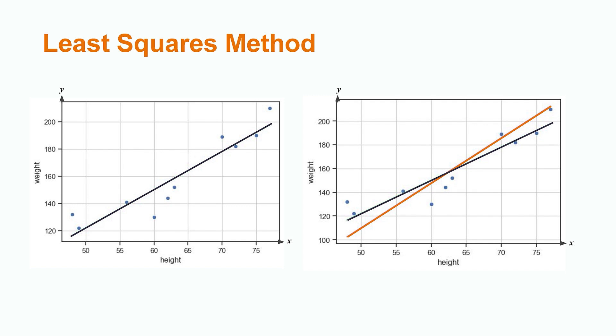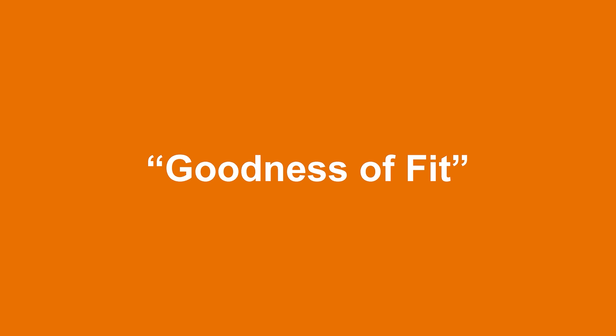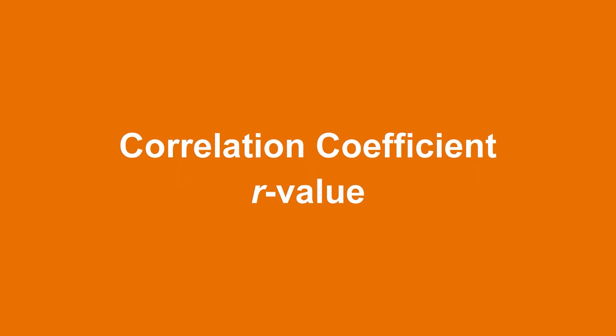The data might just not be very linear, or there might not even be a relationship between the x and y values at all. One way we can measure the goodness of fit of our linear model is with something called the correlation coefficient, often referred to as the r-value.